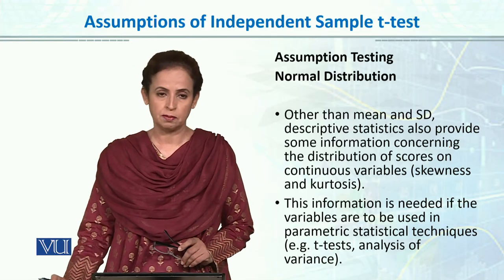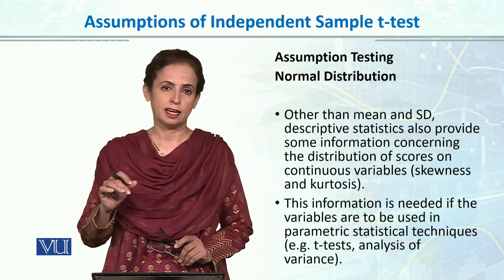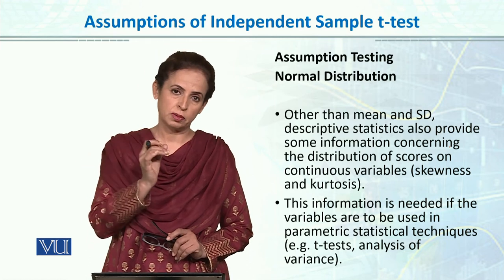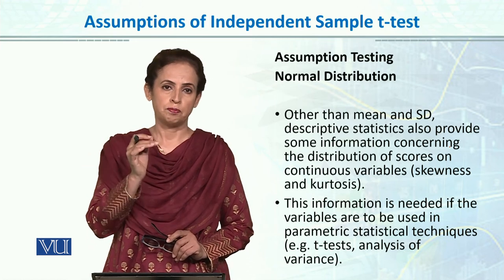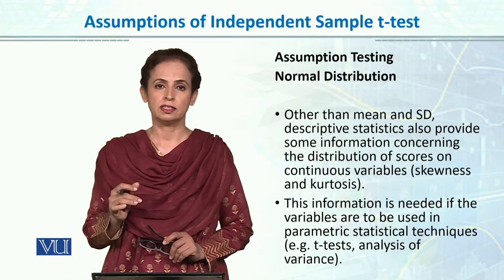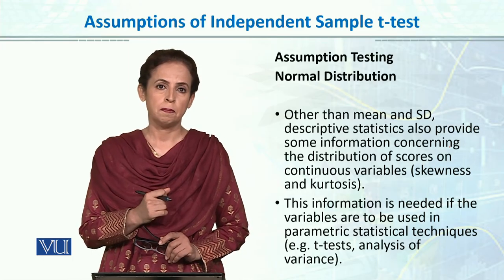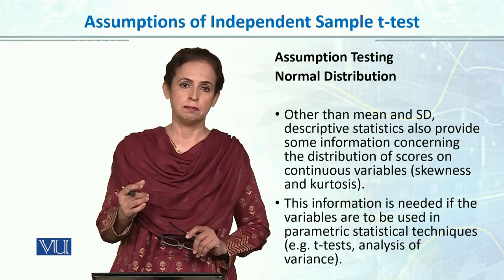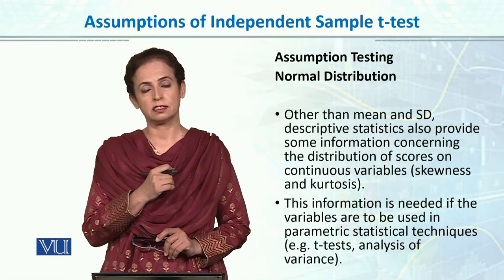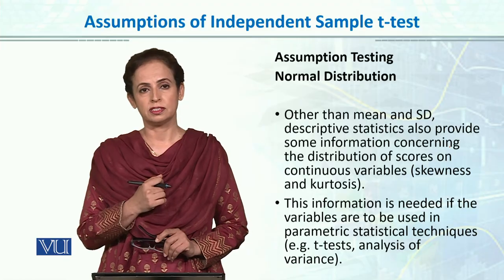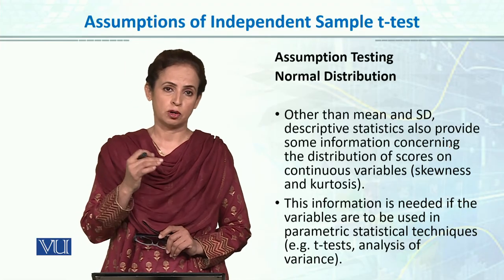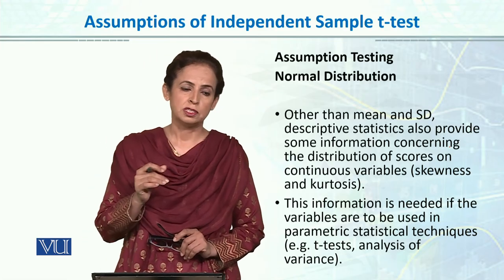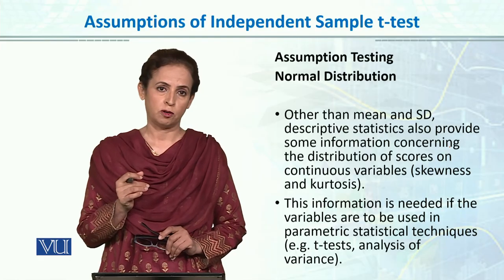In addition to mean and standard deviation, descriptive statistics also provide information about the distribution of scores on a continuous variable. We can check normality through histograms, through PP-QQ plots, and through test statistics such as Shapiro-Wilk or Kolmogorov-Smirnov. All these methods help us determine whether the normality assumption is being met.